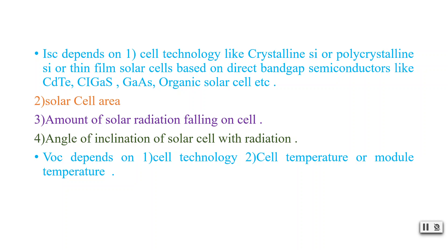These four factors are related to Isc. Next is Voc, the open circuit voltage. This also depends on cell technology — such as crystalline silicon or polycrystalline silicon — as well as thin film solar cells. It also depends on cell temperature or module temperature. Temperature will affect the open circuit voltage, and how this affects Voc we will see further.